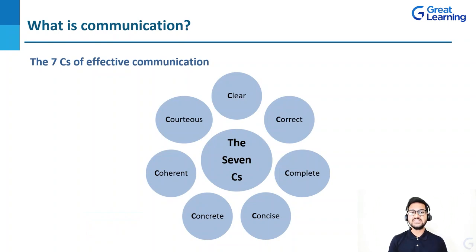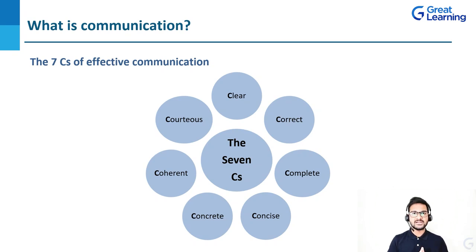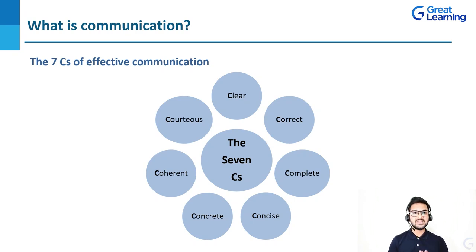Now let's discuss the seven C's of effective communication. Number one: clear — whatever you are saying should be clear with no room for doubt, and the other person should understand exactly what you are saying. Then correct — whatever you are saying should be correct; for example, if you are writing a mail with a lot of grammatical or punctuation errors, the meaning of what you are trying to say will not be the same when received by the recipient. Then complete — whatever you are saying should be complete; half information is never good. Make sure whatever you are saying is precise and concise.